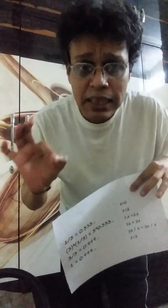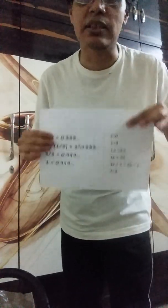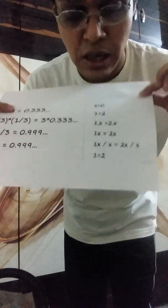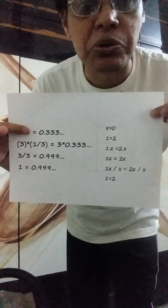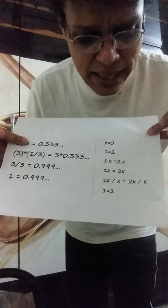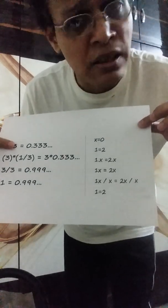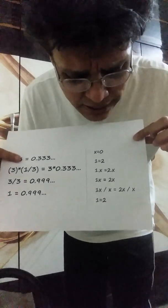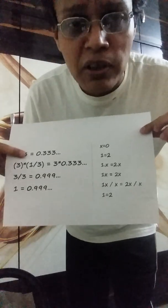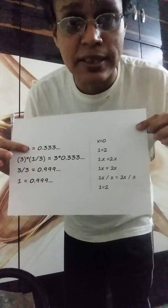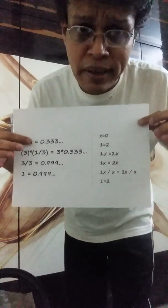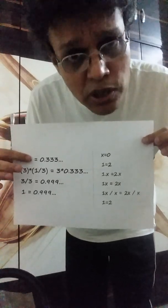Here's another example: someone argued that 1 equals 2. They said let x equal 0, then 1 times x equals 2 times x. Dividing both sides by x gives 1 equals 2, and they were very happy. But wait — they divided by zero. Dividing by nothing: does that make sense? No. That's a big problem.